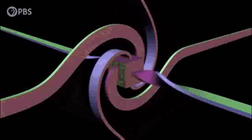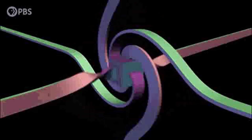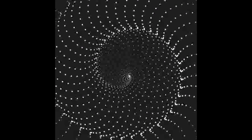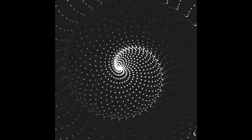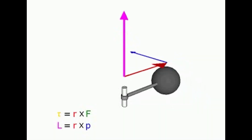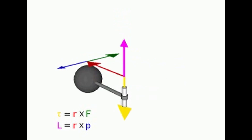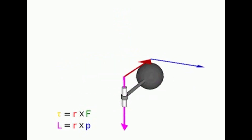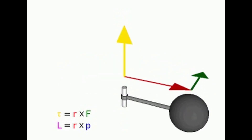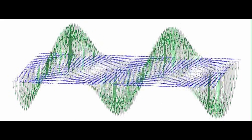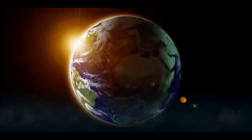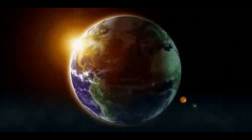6. Commutation Relations. Angular momentum operators do not commute with each other. The commutation relations are given by: [Jx, Jy] = iℏJz, [Jy, Jz] = iℏJx, [Jz, Jx] = iℏJy. These non-commutative relationships imply that we cannot simultaneously measure all three components of angular momentum with arbitrary precision. This is a manifestation of Heisenberg's uncertainty principle in quantum mechanics.